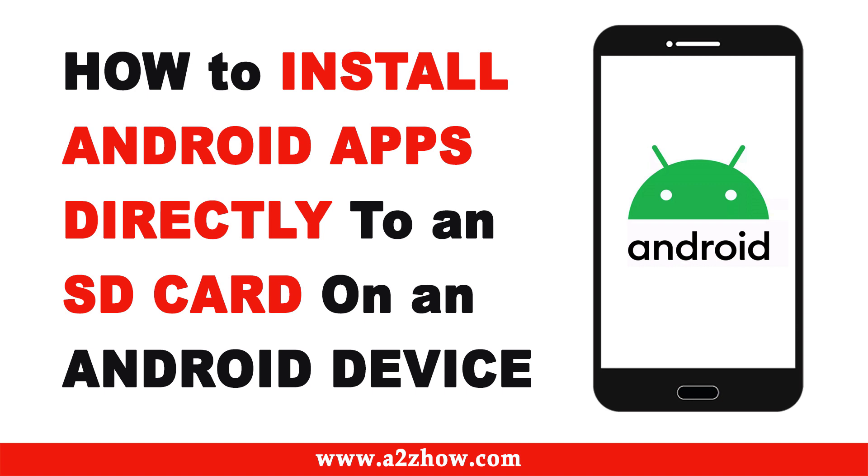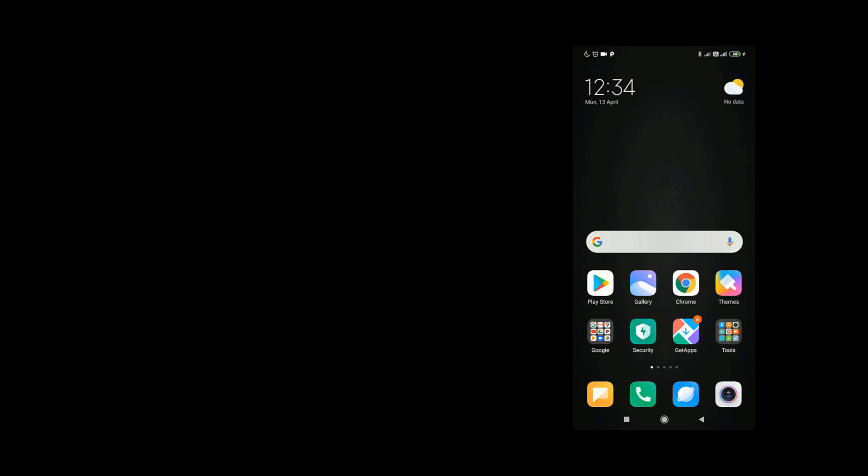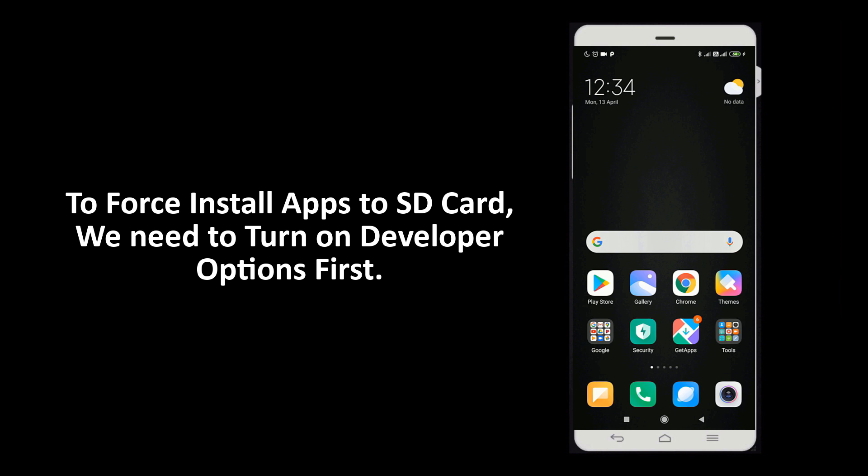How to install apps directly to an SD card on an Android device. To force install apps to SD card, we need to turn on developer options first.